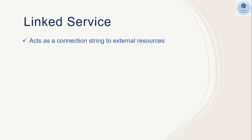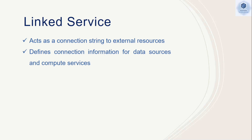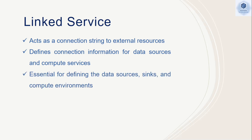The linked service is the connection string for your external resource, which can be an Azure or a third-party resource that you are going to connect with. This connection string defines the connection endpoint for your data source or destination. It also contains the authentication type and authentication method that you are going to use for your data source or data destinations.